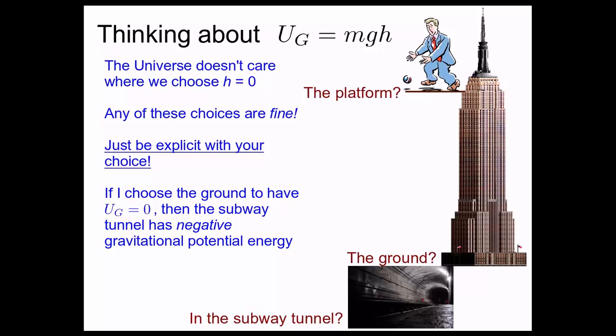If I choose the ground to have zero gravitational potential energy, then points in the subway tunnel, below the ground, have negative gravitational potential energy. There's absolutely nothing wrong with that.